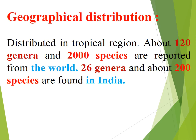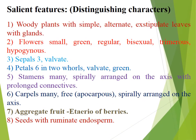Geographical distribution of family Annonaceae: it is distributed in tropical regions. About 120 genera and 2000 species are reported from the world. 26 genera and about 200 species are found in India.